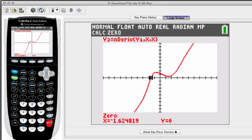There we go. So we have an x value of approximately negative 1.625.